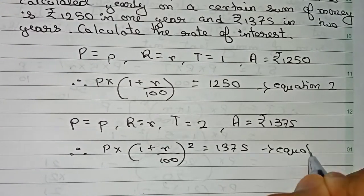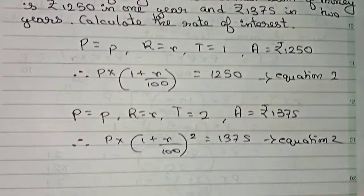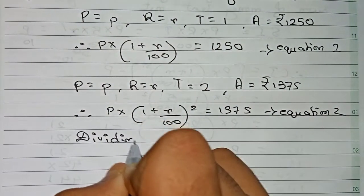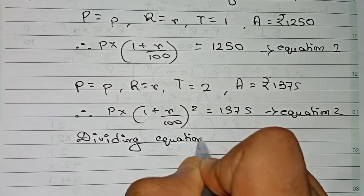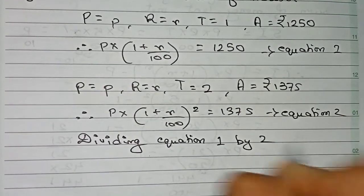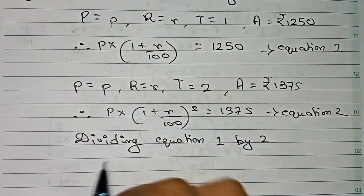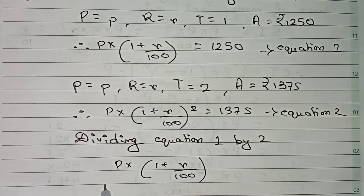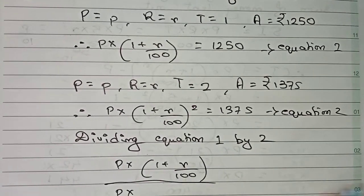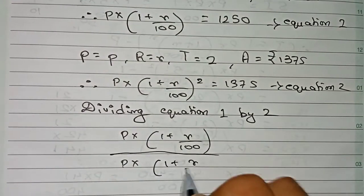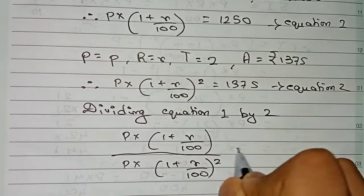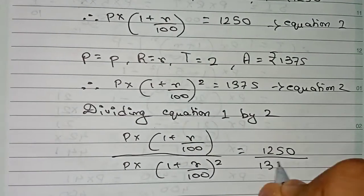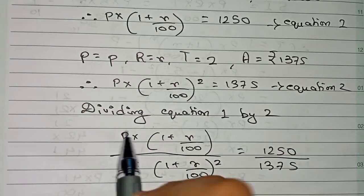Now we divide equation 1 by equation 2. So: P into (1 + R/100) to the power 1, divided by P into (1 + R/100) to the power 2, equals 1250 by 1375. Here, first we cancel the principal P on both sides.